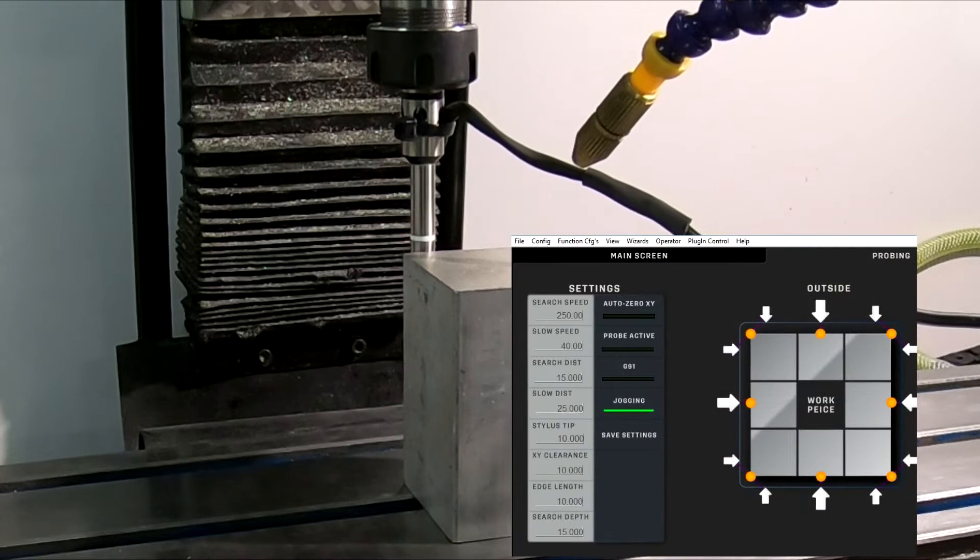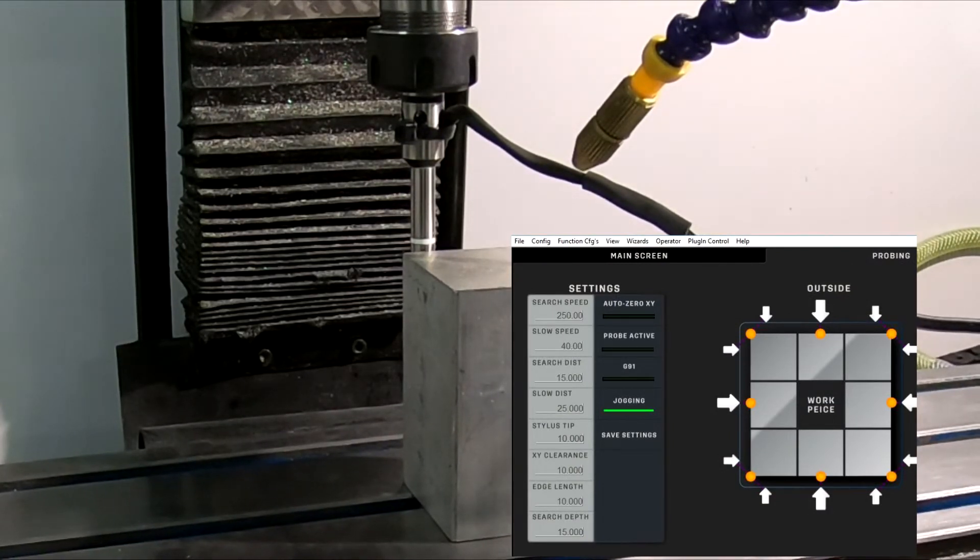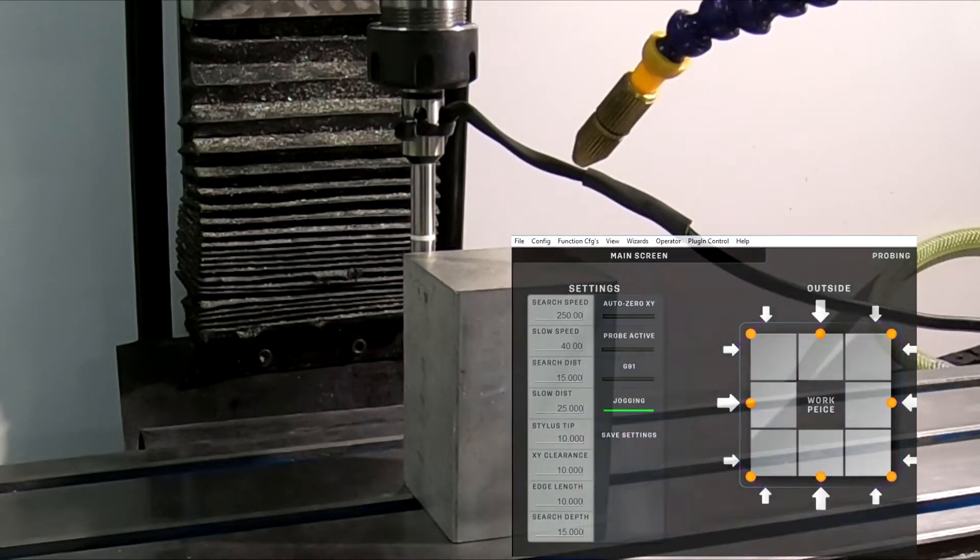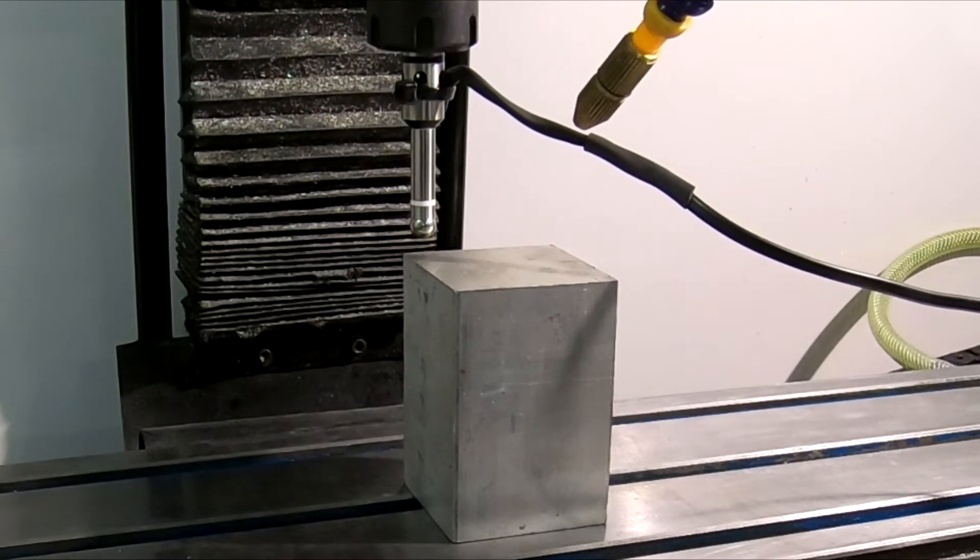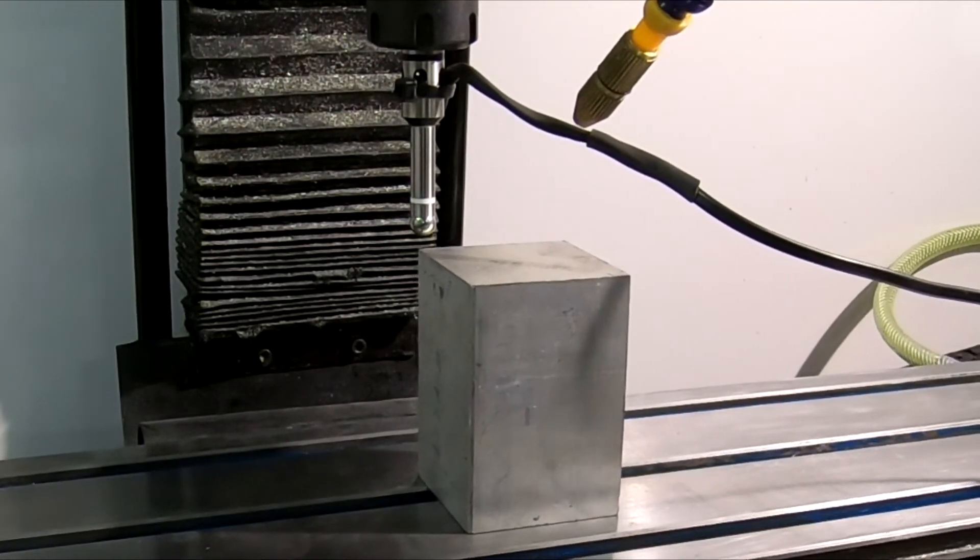All these movements and speed you can define in the macro or on the screen. Now we have both X and Y zeroed, and it will move to the zero point.